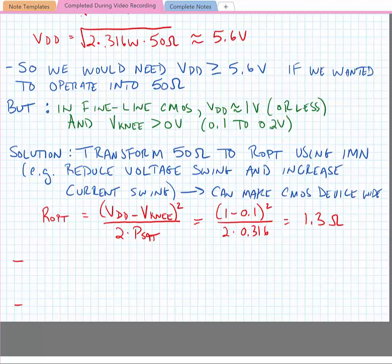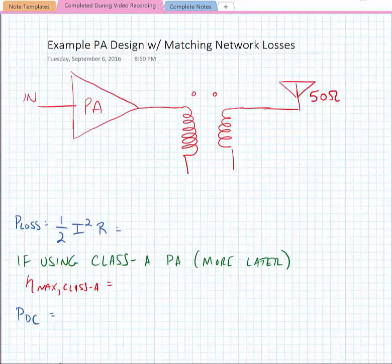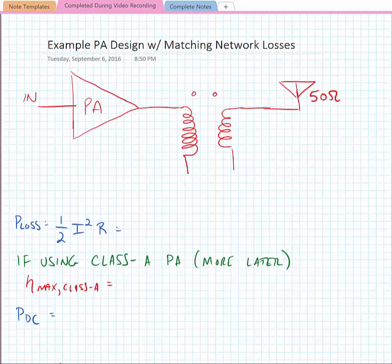This doesn't account for any losses in the matching network or any current division due to finite output impedance of the transistor. So in order to achieve this optimum termination impedance of 1.3 ohms, we would need an impedance transformation network that transforms with a 6-to-1 transformer. For the time being, we're going to assume that we have just a transformer that's going to do our impedance transformation, and it's a 1-to-6 transformer.